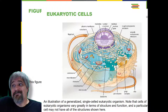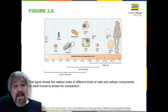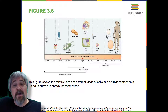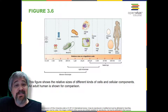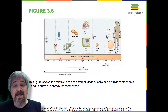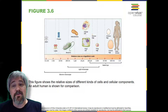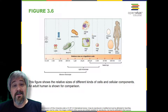Cell size. At 0.1 to 5 micrometers in diameter, prokaryotic cells are significantly smaller than eukaryotic cells, which have diameters ranging from 10 to 100 micrometers. The small size of prokaryotes allows ions and organic molecules that enter them to quickly spread to other parts of the cell. Similarly, any wastes produced within a prokaryotic cell can quickly move out.